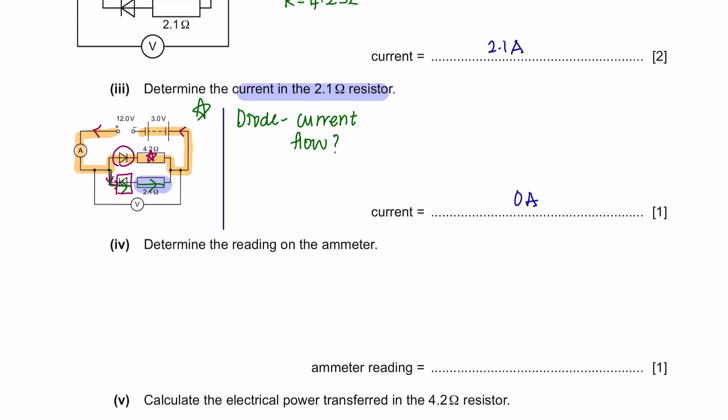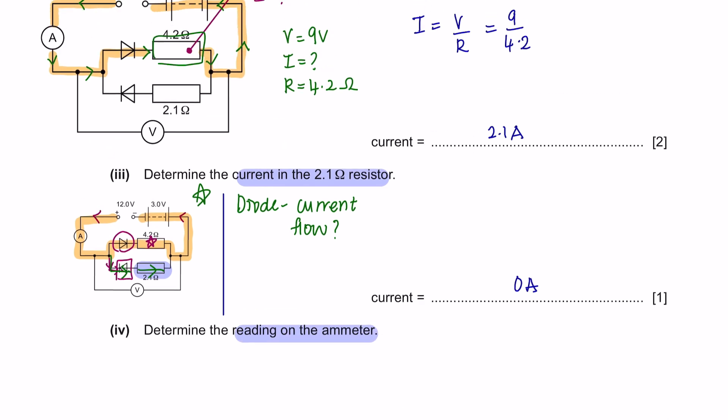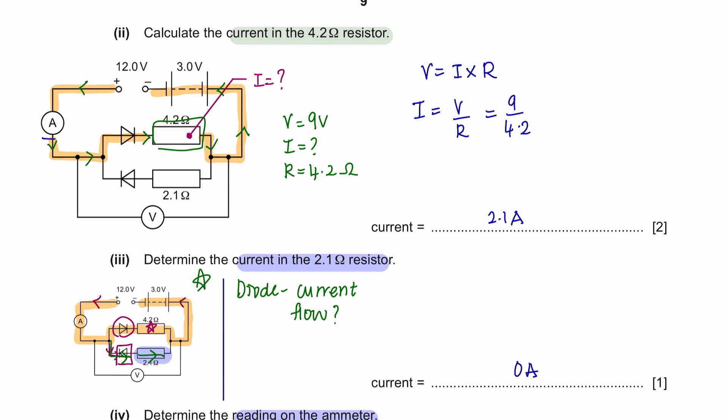Part 4, determine the reading on the ammeter. There is an ammeter placed here and previously we calculated that the current flow in this resistor is 2.1 amperes. In a series circuit, the current is the same value at any point of the circuit, meaning that the current here on the ammeter will also be 2.1 amperes.